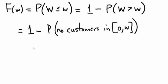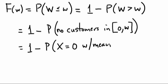And that turns out is a Poisson random variable, because x is an approximate Poisson. Probability that x equals 0 with mean. Now what is the mean in this case? Well, if the mean number of events in interval of length 1 is lambda, then the mean of the number of events in the interval of length w is lambda w.